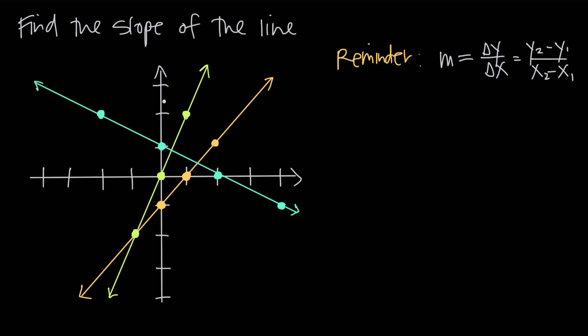So how do we define this mathematically? We usually use m to define the slope — m means slope — and m is going to be equal to the change in y over the change in x. This little triangle is called delta; it's the Greek letter delta, and it's what we use to describe change. So this just means change in y over change in x: how fast is y changing compared to how fast x is changing?